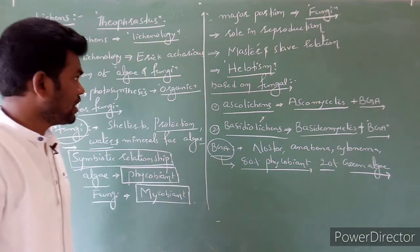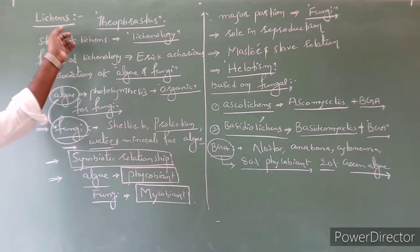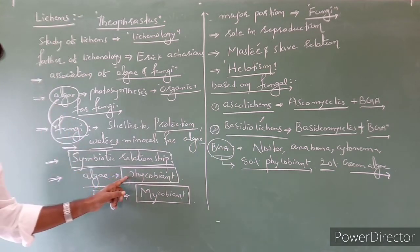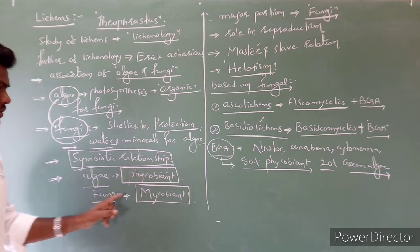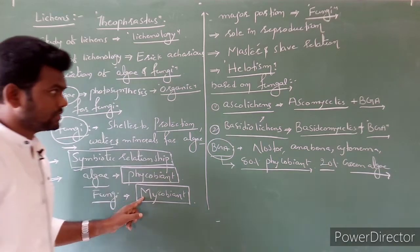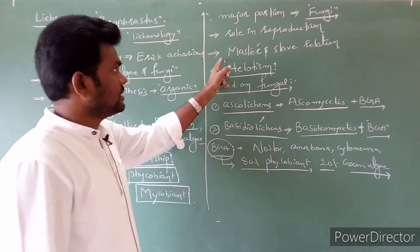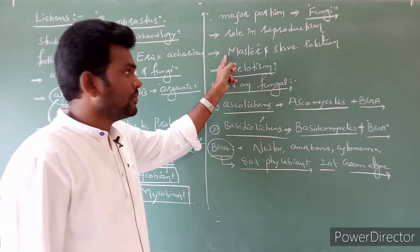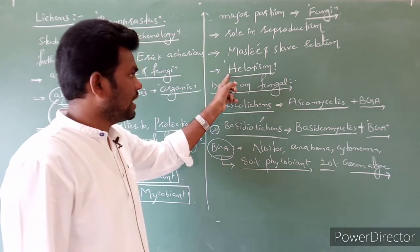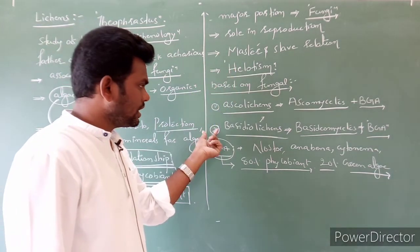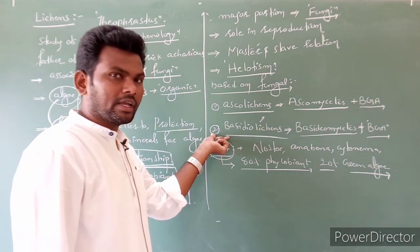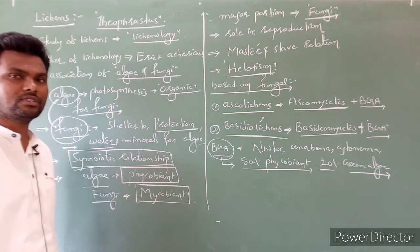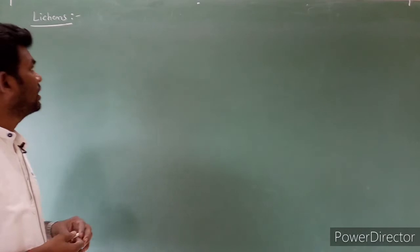To summarize lichens: the algal partner is called phycobiont, the fungal partner is called mycobiont. The relationship is also called master and slave relationship, nowadays called Helotism. Mostly the algal partner is BGA.